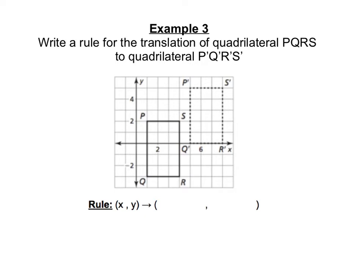Here we have our pre-image, quadrilateral PQRS, and we want to know the rule that translates that to its image, quadrilateral P'Q'R'S'. Make sure when you're looking for the rule that you always start at the pre-image, that's the one with just the capital letters, and then you want to look at its corresponding point in the image.